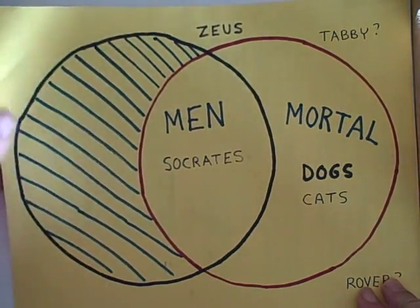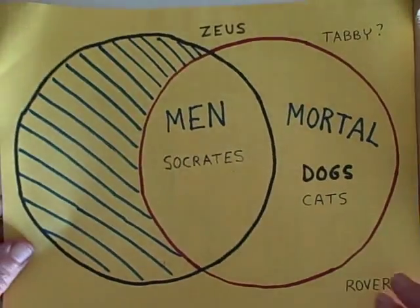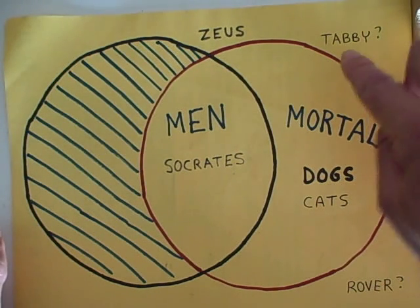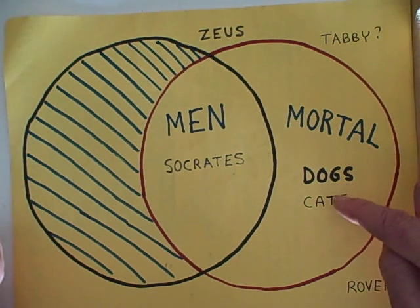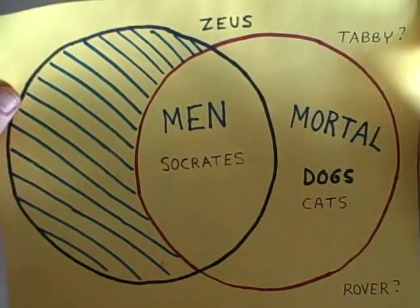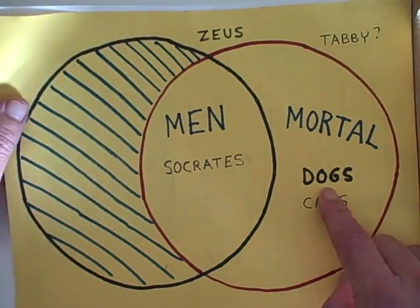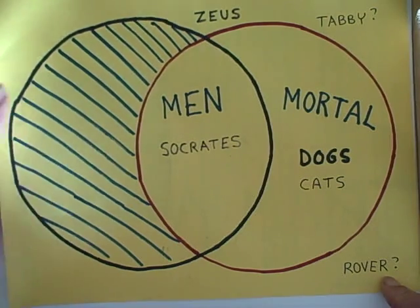Let's take a look at some other minor premises that we cannot derive valid conclusions from. Tabby is not a man — that means Tabby has to be outside of this circle. But we don't know if Tabby is a computer program that might be immortal, or whether Tabby is a cat that would be something mortal. Or if we were to say Rover is not a man — similarly, we do not know if Rover is a dog that would put him in the mortal circle, or whether Rover is something else, like a lunar module that might be sort of immortal.